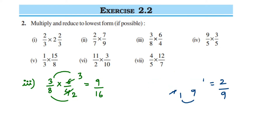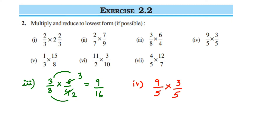Fourth question: 9/5 multiplied by 3/5. Here we cannot cancel — 9 and 3 both go in the 3 table, and 5 and 5 both go in the 5 table, but we cannot cancel them because they are both in the numerator or both in the denominator. So just multiply: 9 × 3 = 27, and the denominator is 5 × 5 = 25. The answer is 27/25.